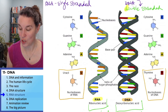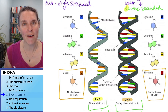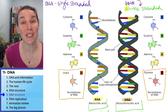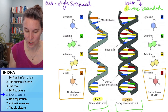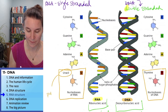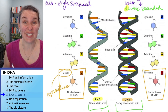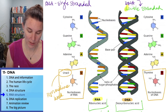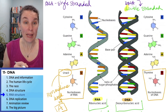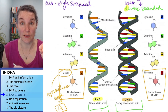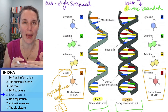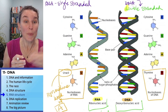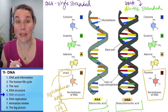RNA nucleotides have a base called uracil. Uracil is a pyrimidine — it's almost just like thymine, and it even forms a bond with adenine. So in RNA, if you see a uracil, it means it's going to connect with adenine.